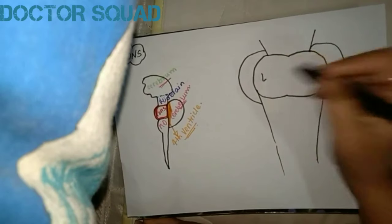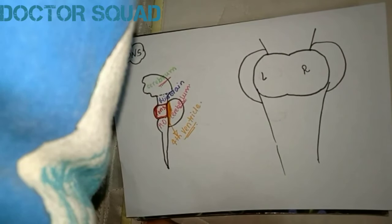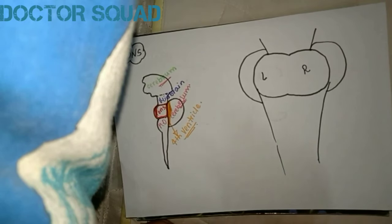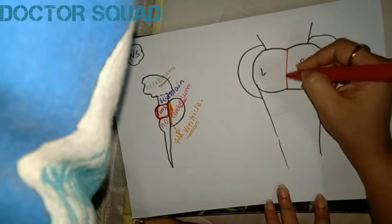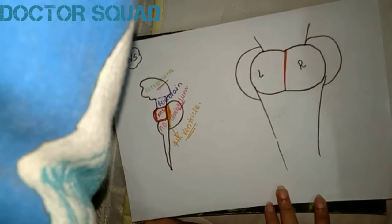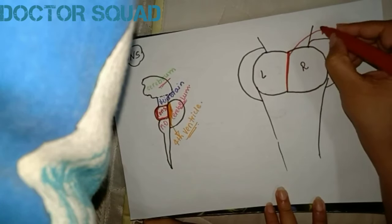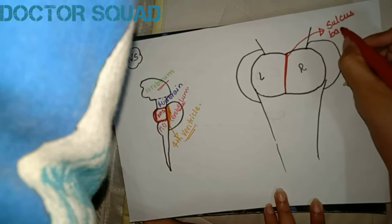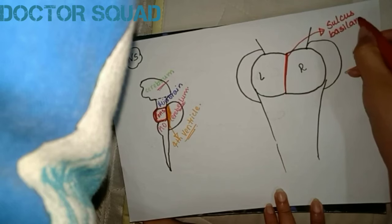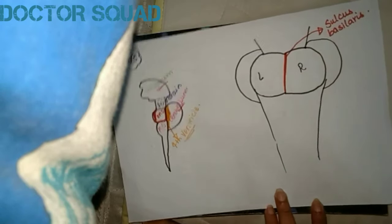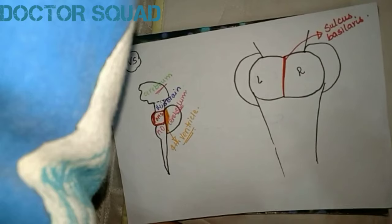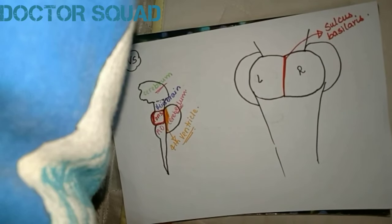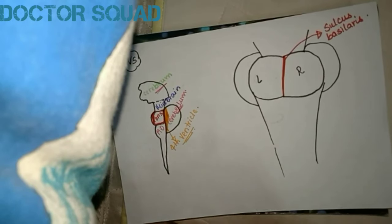This is the left side of pons and this is the right side of pons. Both sides are divided by a sulcus. There is one sulcus that divides pons into two parts — right and left. This sulcus is known as sulcus basilaris.